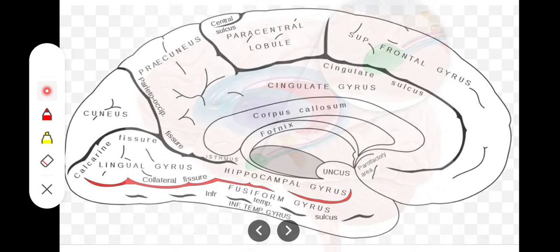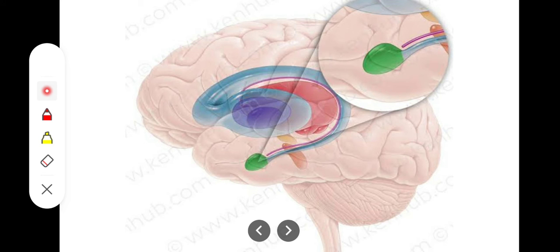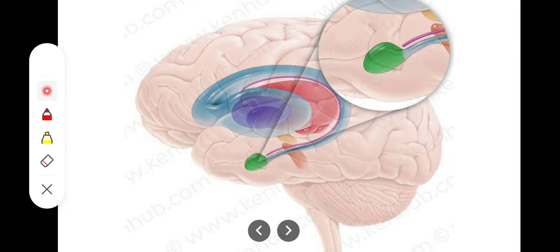The amygdaloid body is present at the tip of the inferior horn of the lateral ventricle. Its posterior fibers connect with the tail of the caudate nucleus, which is part of the basal ganglia. From the posterior end of the amygdaloid nucleus, we have the origin of fibers called the stria terminalis.